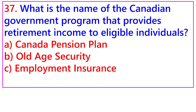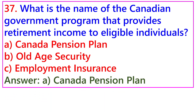Question 37: What is the name of the Canadian government program that provides retirement income to eligible individuals? A. Canada Pension Plan, B. Old Age Security, C. Employment Insurance. Answer: A. Canada Pension Plan.